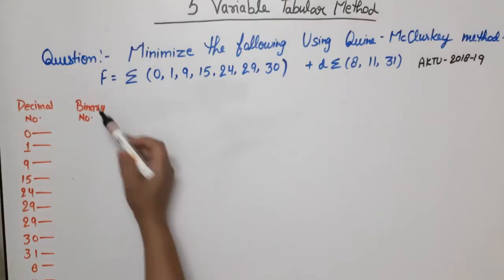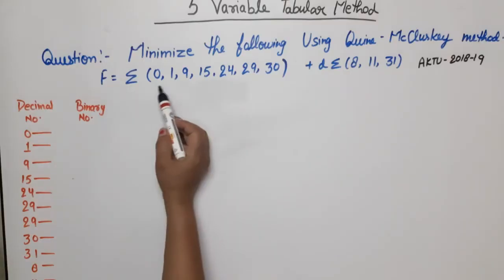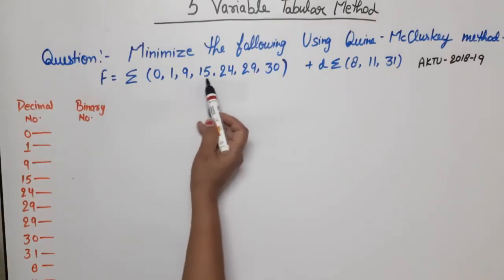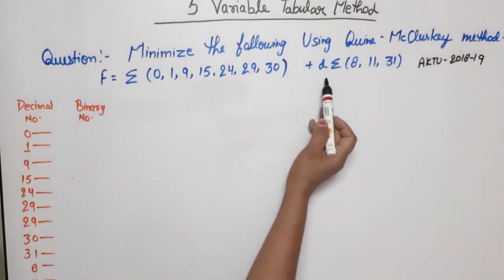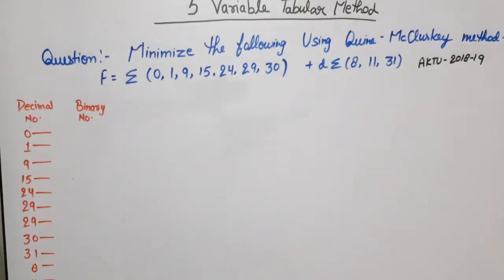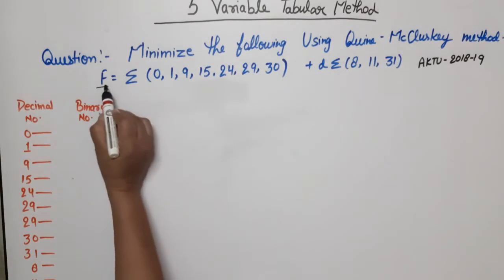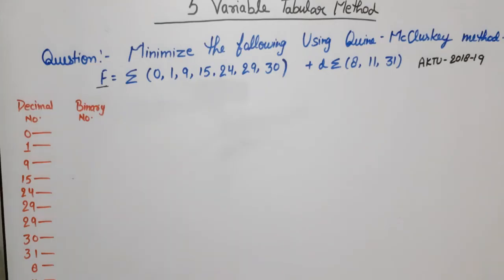What is the function? F is equal to sigma(0, 1, 9, 15, 24, 29, 30) plus don't care(8, 11, 31). These are our don't care conditions. But you can see that the function does not mention which variable function it is.